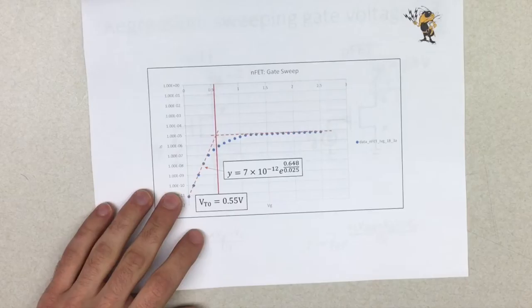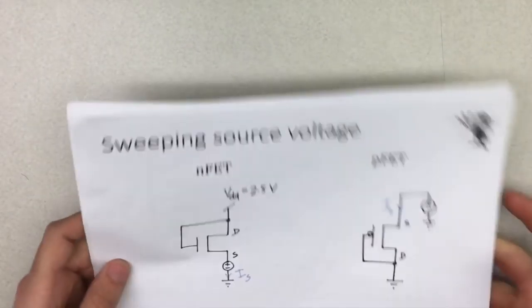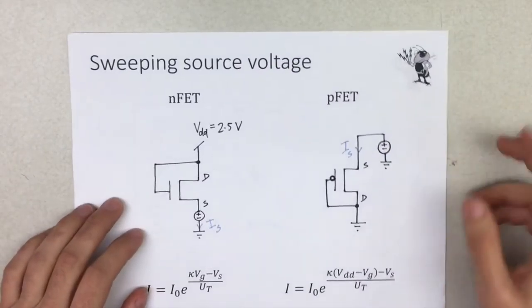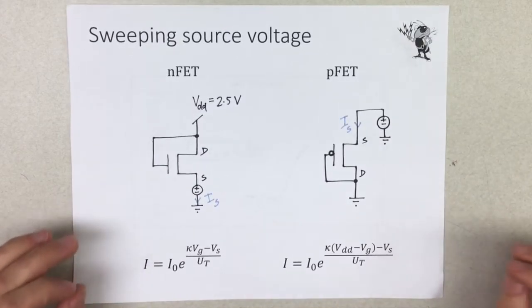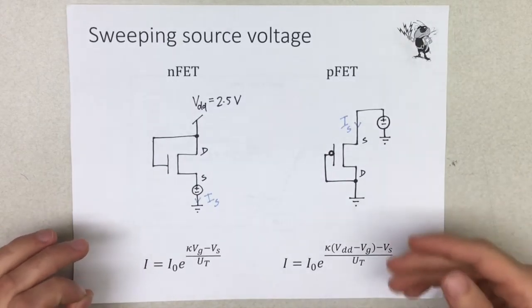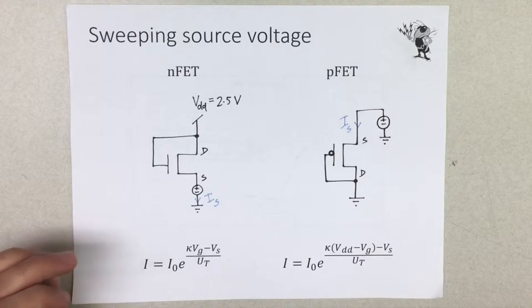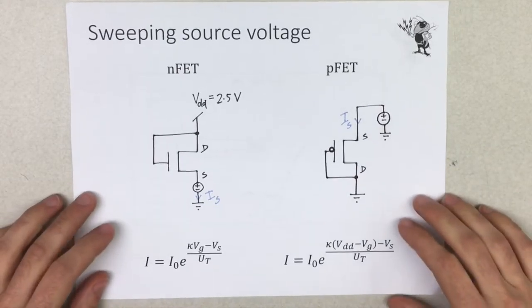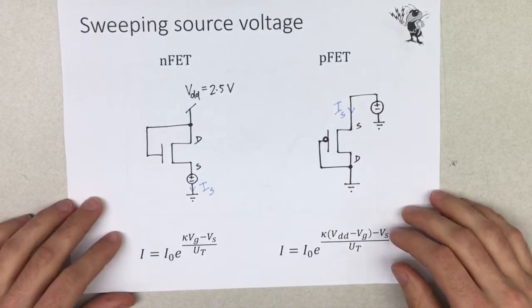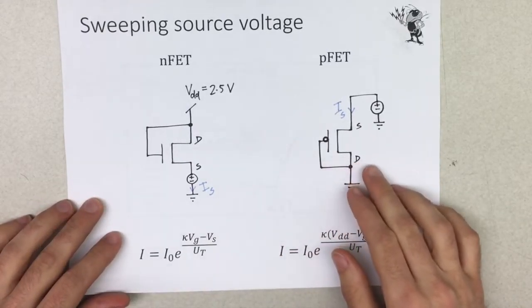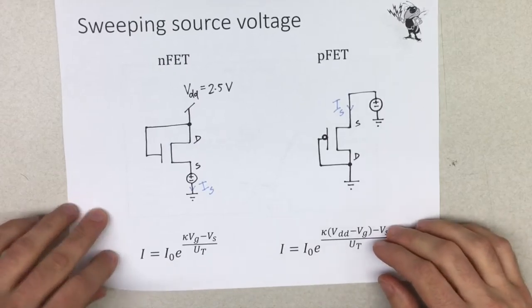Next sweeps that we did were the source sweeps of the nFET and PFET to get the thermal voltage. So before on the gate sweeps, we fitted to the saturation current and kappa values. Then we used that here to find the thermal voltage. And these are the circuit configurations for sweeps.